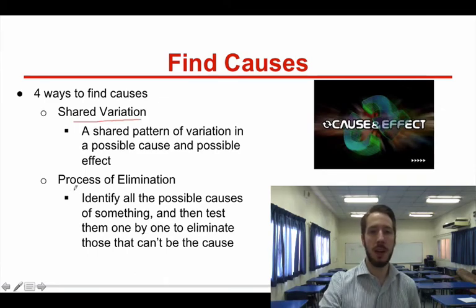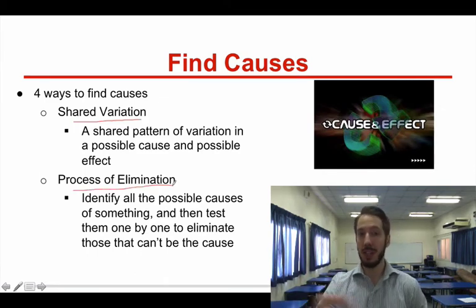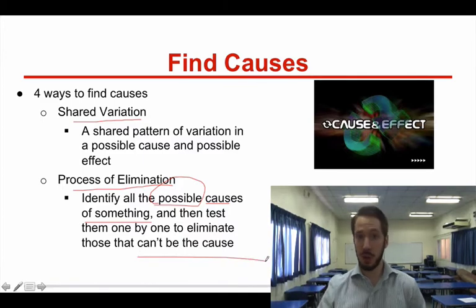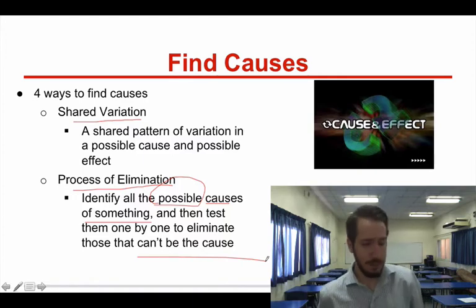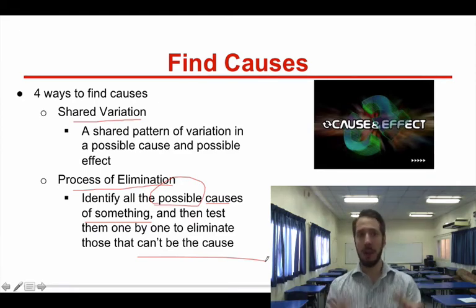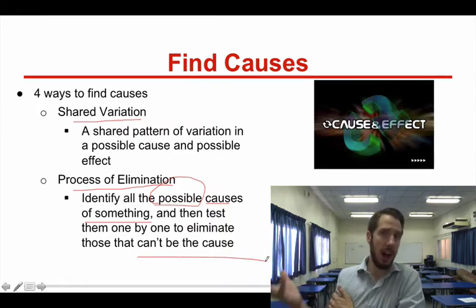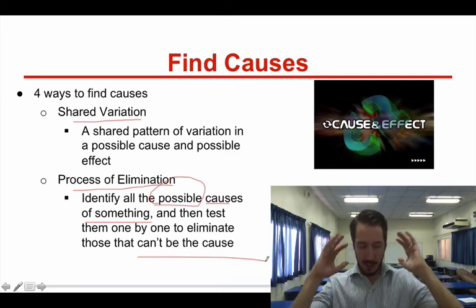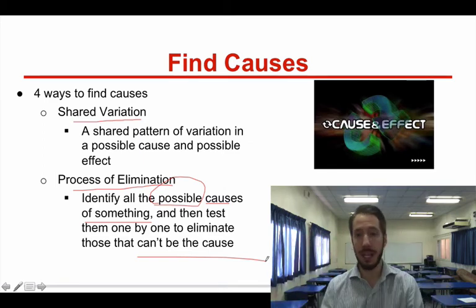You could also look for process of elimination as you're researching — look at all the possible causes of something, then test them until you can find out which one isn't the cause. So you can write a claim saying the biggest effect of crime in cities would be poverty, and you could list how you looked at a lot of different factors and poverty is the main cause of crime in urban centers. These are things to keep in mind as you're researching to come up with a causal argument.